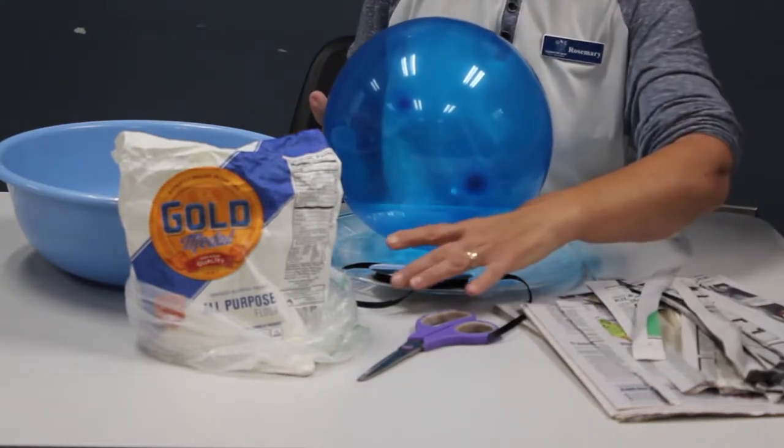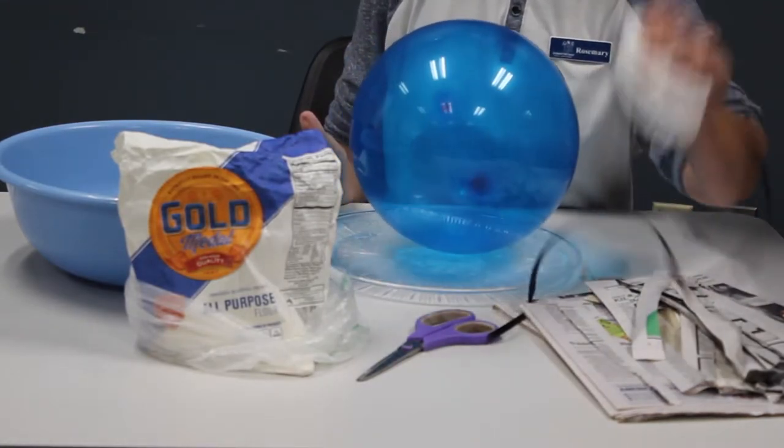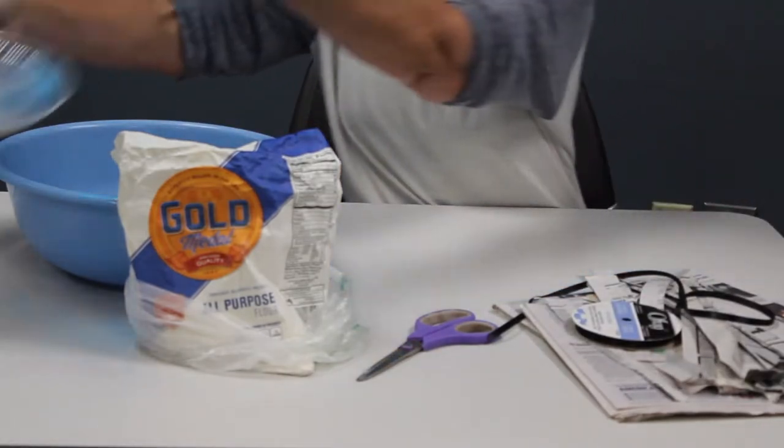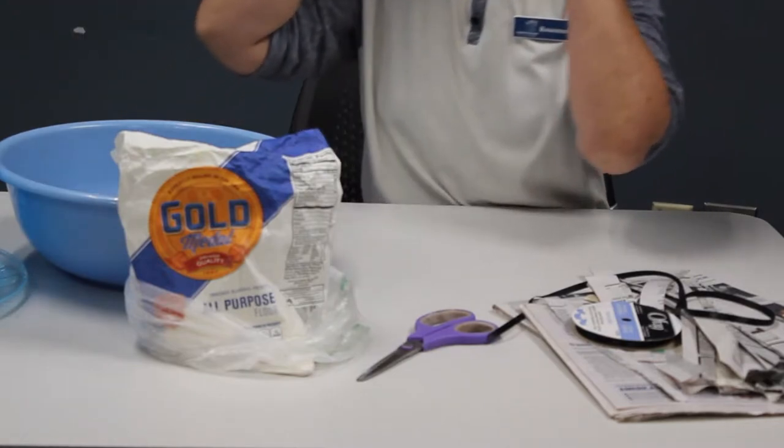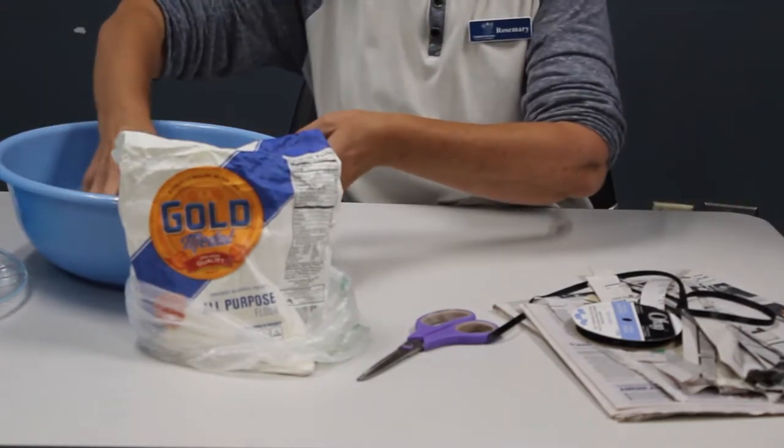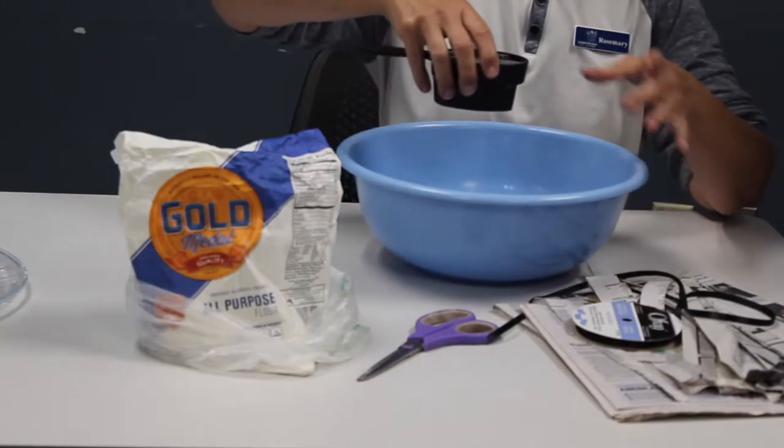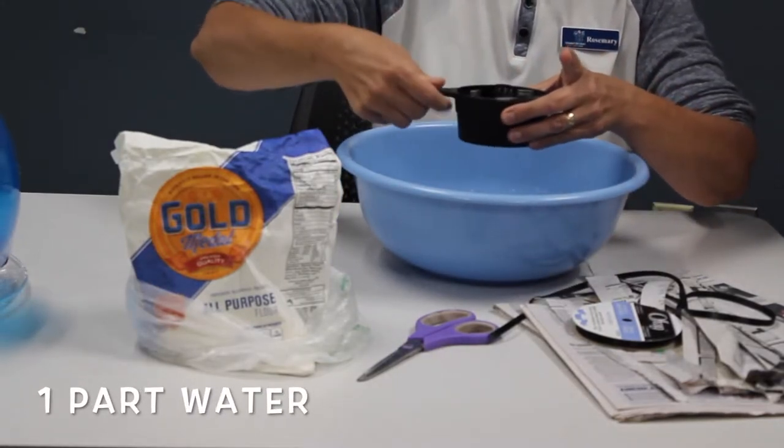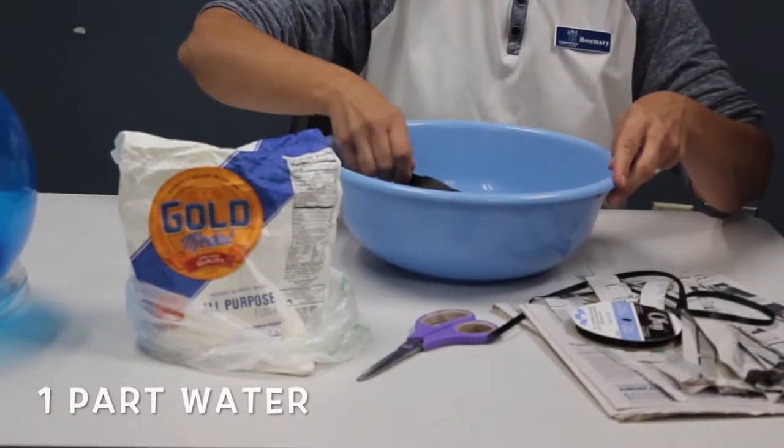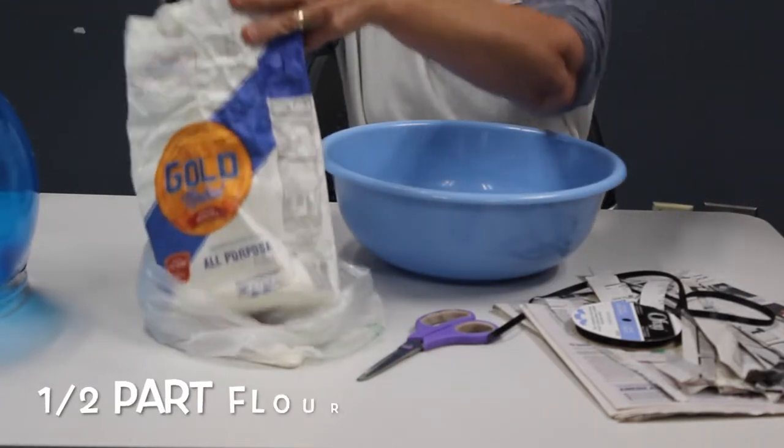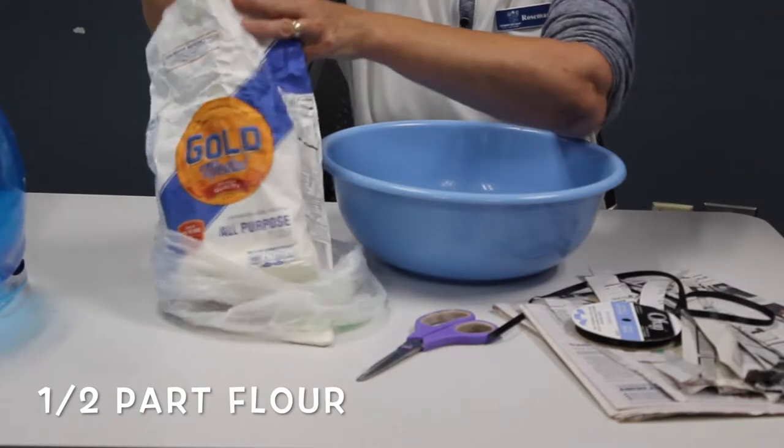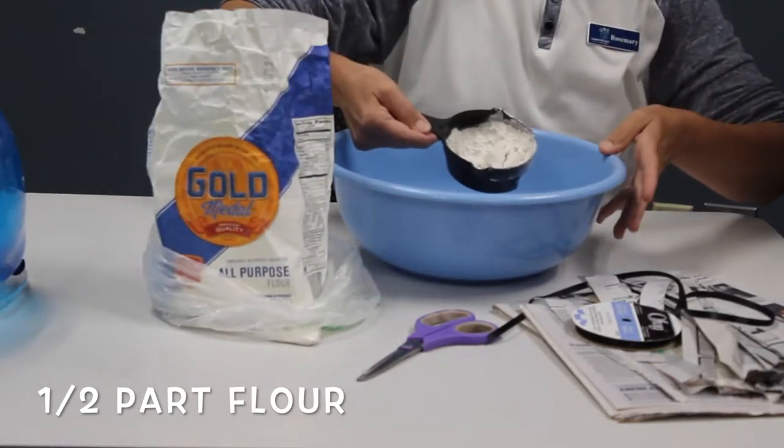The other part that you'll need to do is to make the paste for the papier-mâché. And it's very simple. You're going to take one part water, so here's a cup of water, and to that you're going to add about a half a cup of flour.